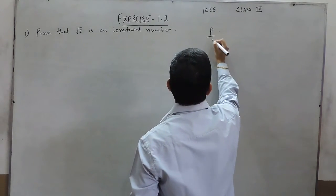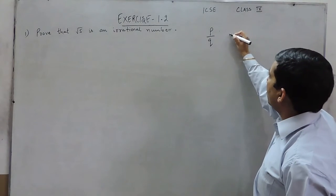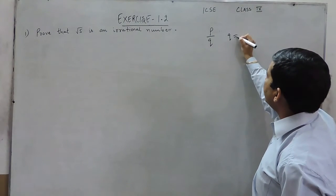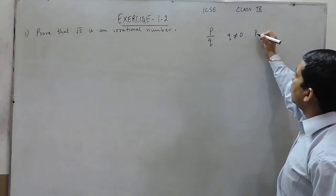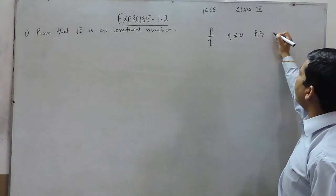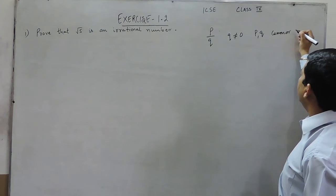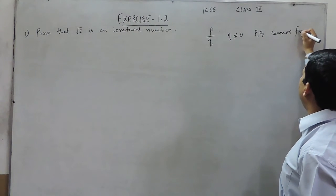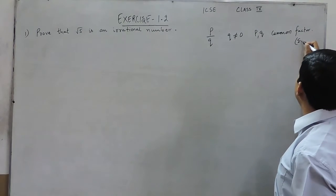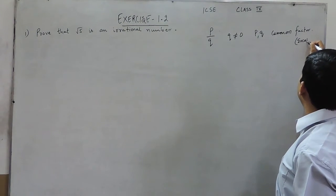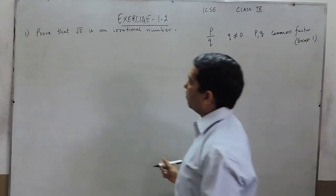Rational numbers are those numbers which can be put in the form of P upon Q, where Q is not equal to 0, and P and Q have only one common factor — that is, they do not have any common factor except 1. So these are basically known as rational numbers.